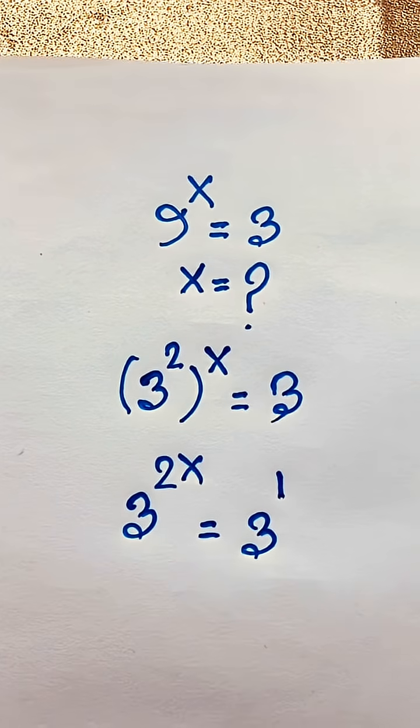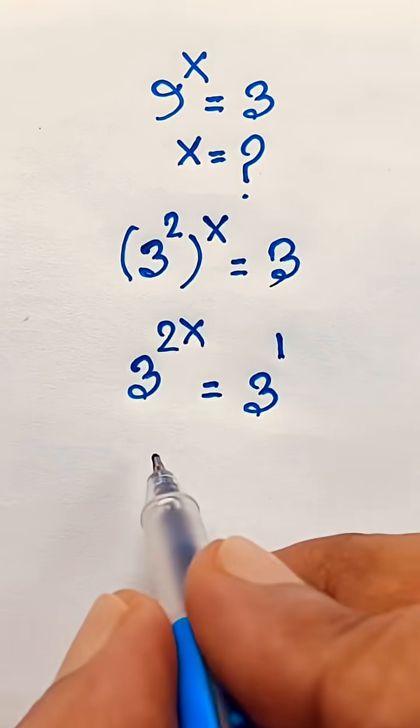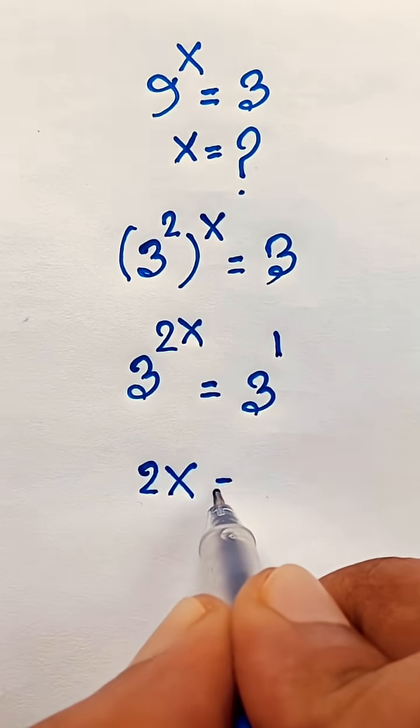We know that this exponent is 1, so base is equal. Here the exponent is equal, 2x is equal to 1.